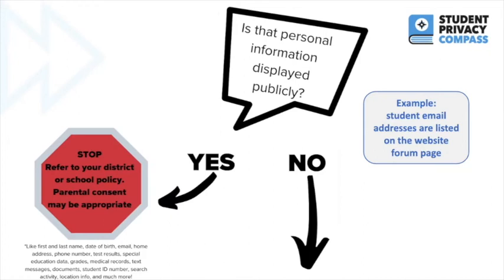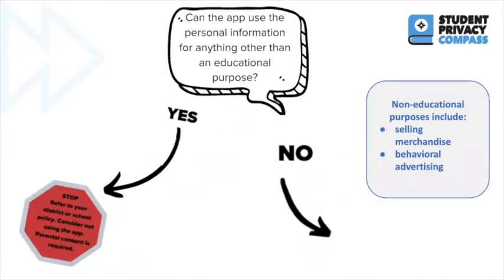If personal information is not displayed publicly, move on to the next question: can the app use personal information for anything other than an educational purpose? Think back to those commercial purposes, such as selling merchandise or behavioral advertising. If the answer is yes and it does use personal information for non-educational purposes, you must stop, refer to your district or school policy, consider not using the app, and note that parental consent is required. If the app only uses personal information for educational purposes, continue to the next question.